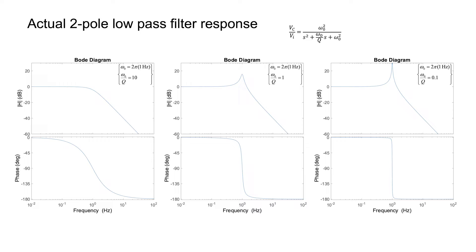Here's what the transfer function looks like for the low-pass case, that is, if we measure the output across the capacitor. Notice that the presence of Q corresponds to a peaking right at the corner frequency of the filter. As Q gets higher and higher, we're moving left to right in these plots.